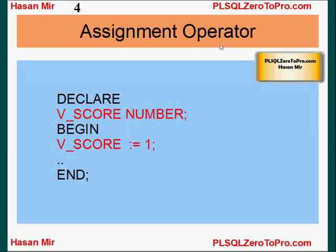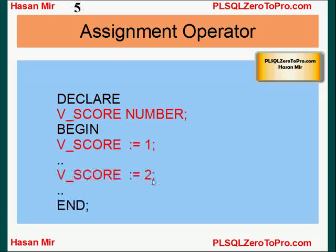Now the assignment operator — I want to give you the syntax for that. This operator is called the assignment operator, and you use it when putting a value into a variable. If you're putting a value in for the first time, it's called initialization; after that, it's called replacement. You can replace the value as many times as you like, and the same assignment operator is used each time.